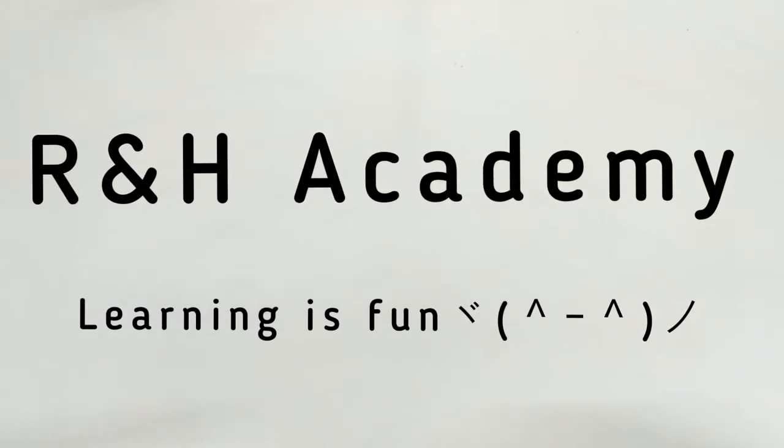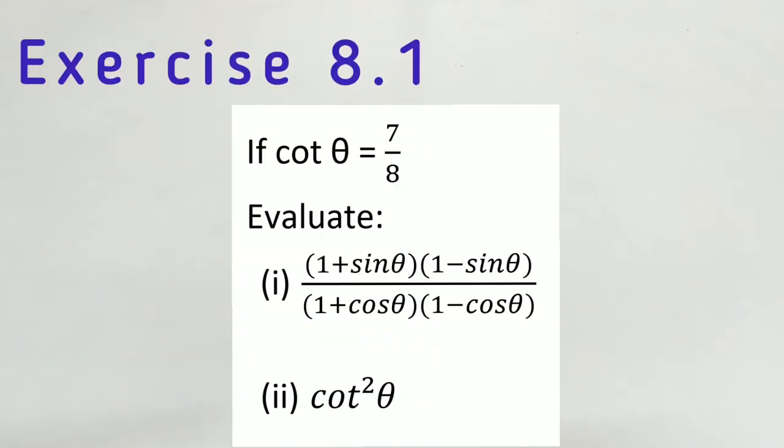Welcome to R&H Academy Channel. Question 7 of Exercise 8.1 says: If cot theta is equal to 7 by 8, evaluate the following.